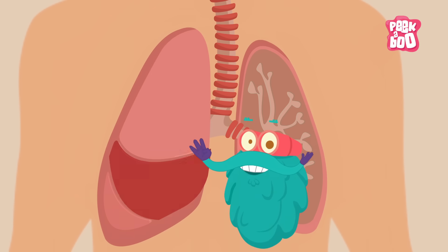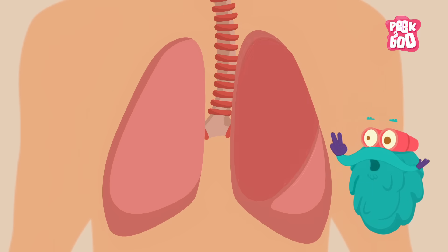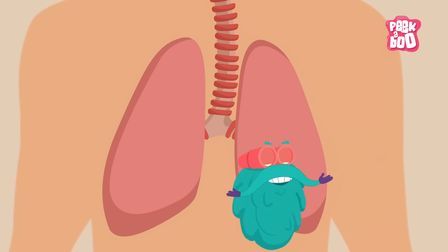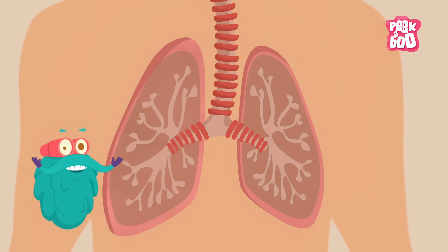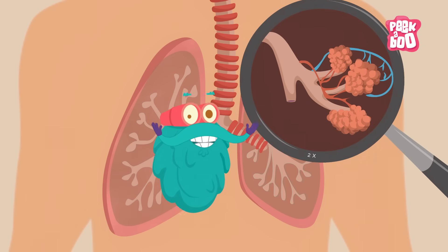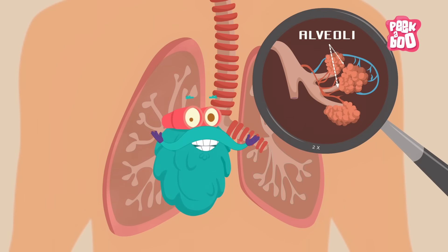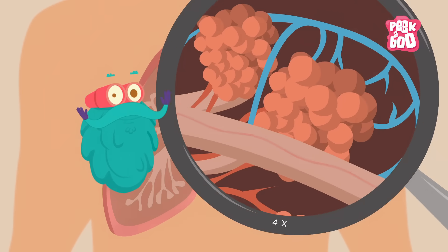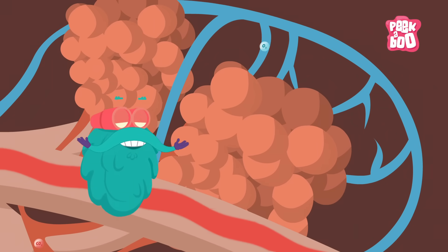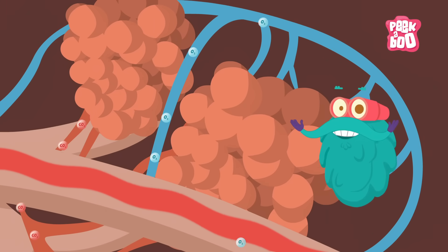The bronchi then carry air into each lung. The right lung has three lobes, whereas the left lung has two lobes. The left lung is slightly smaller in size to give space to the heart. These lobes are filled with small and spongy air sacs called alveoli, where the exchange of oxygen and carbon dioxide happens. It is here the blood picks up oxygen and lets go of carbon dioxide.